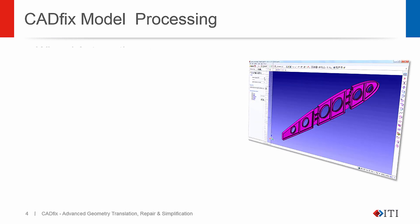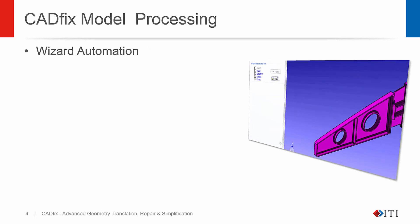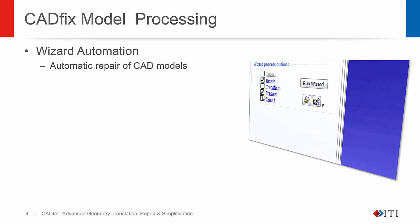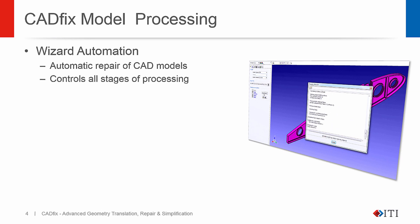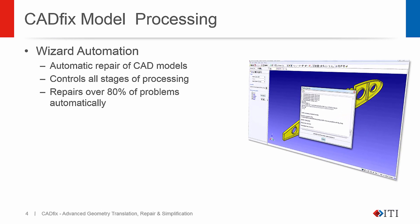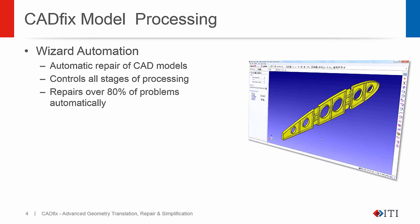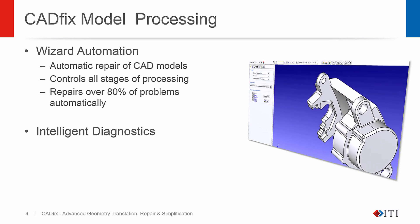CADFIX offers different modes of operation. The primary mode is the automatic wizard, where the user simply specifies their model translation requirements. CADFIX then processes the model and automatically repairs between 80 and 100 percent of geometry problems.